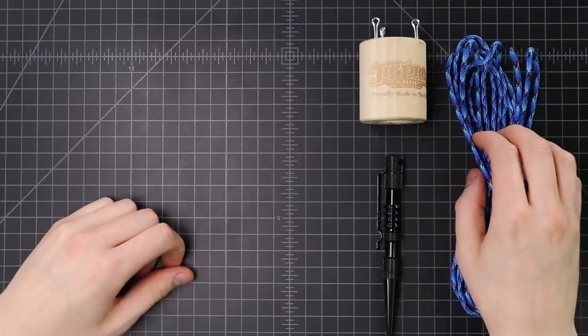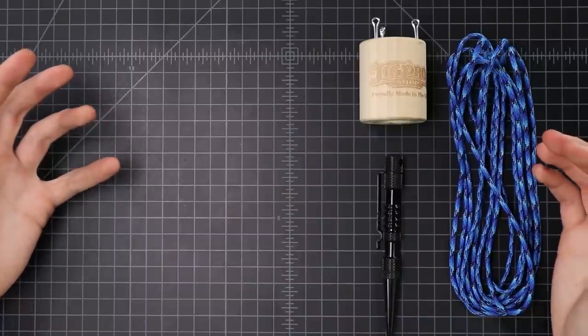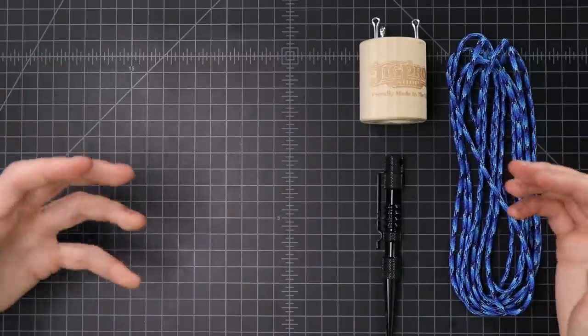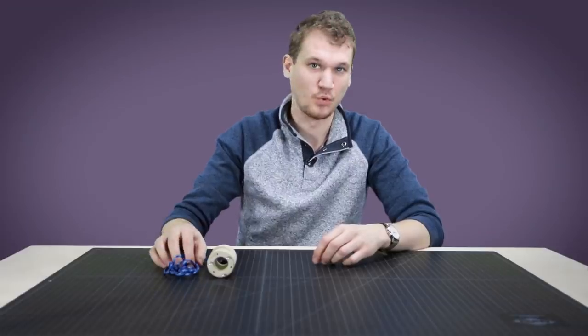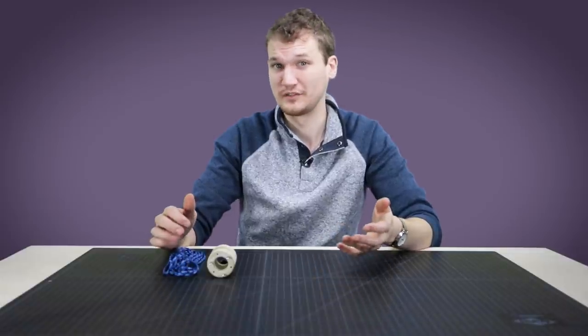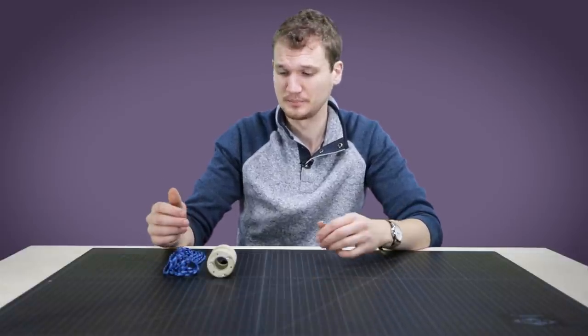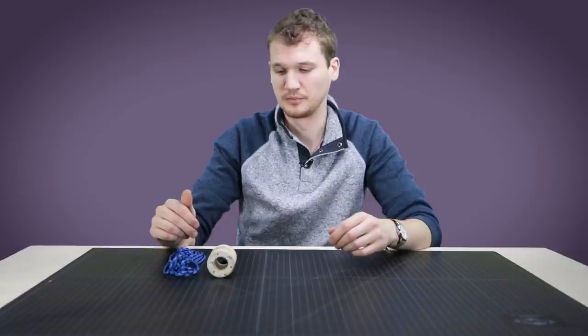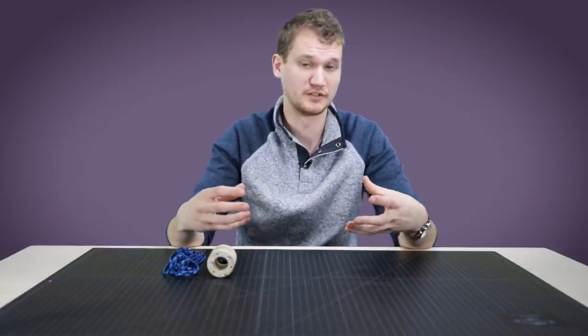So I've got 10 feet of paracord here with me. It just depends on how long you want your project to be in the end. Calculating it out, about one foot of paracord turns into one inch of weave, kind of like a Cobra or Solomon bar bracelet, but you'll want to leave some extra if you're wanting your finished cord to be a certain length.